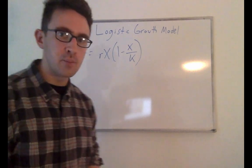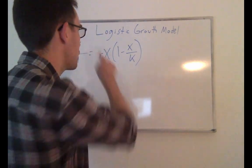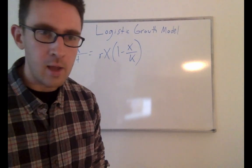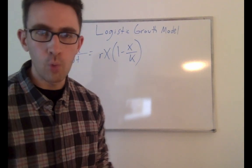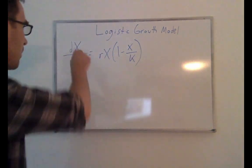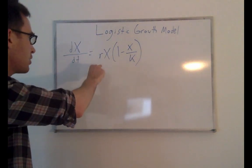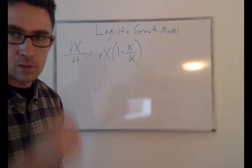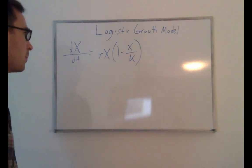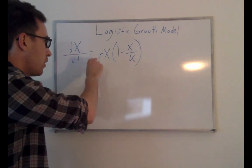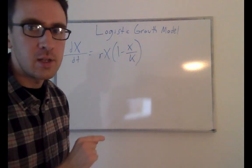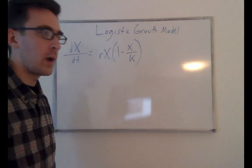Before we get into the actual code, I'm just going to quickly remind you guys about the logistic growth model. I'm going to be using this ODE model as an example for this video. It's a model of population growth where the population starts off growing at close to an exponential rate, but then as it approaches a carrying capacity, the growth slows down until it flattens out around the carrying capacity.